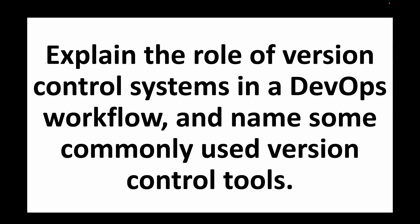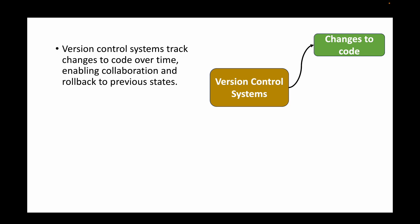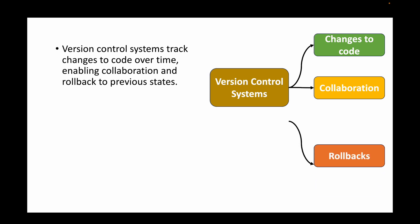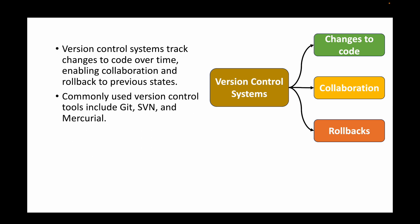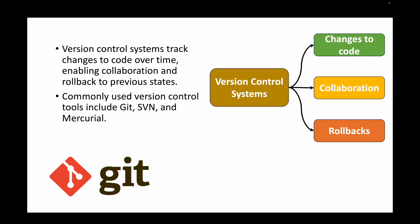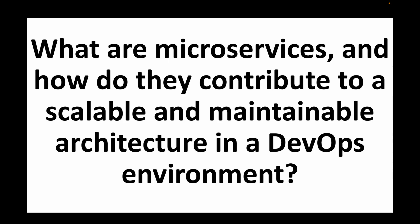The next question is: explain the role of version control systems in a DevOps workflow and name some commonly used version control tools. Version control systems are essential for maintaining versions of your code over time, tracking changes, enabling collaboration between multiple developers, and rolling back to previous versions. Commonly used version control systems include Git, SVN (Subversion), and Mercurial.